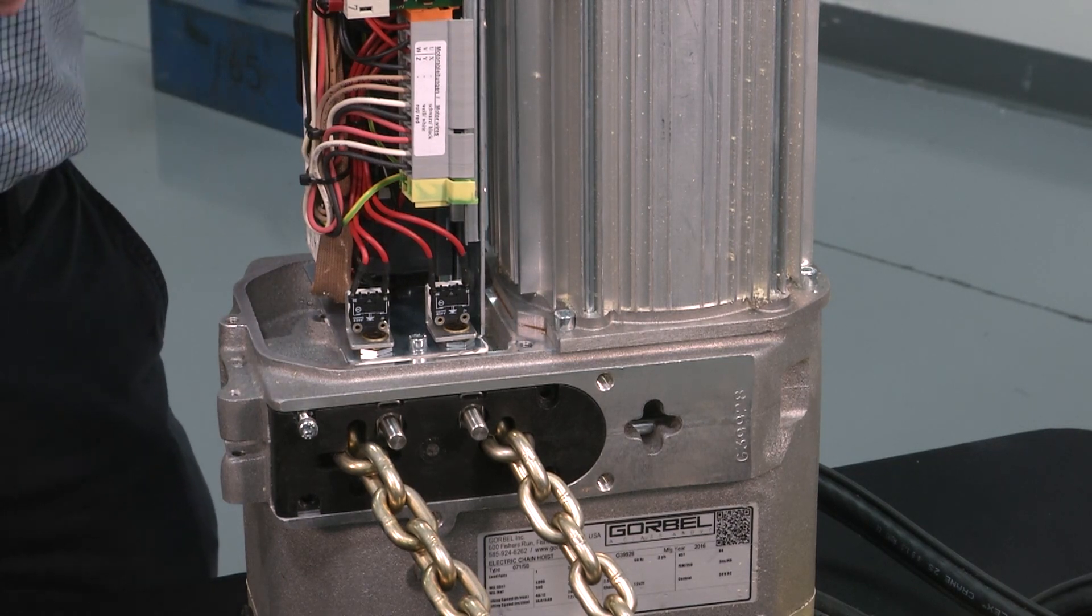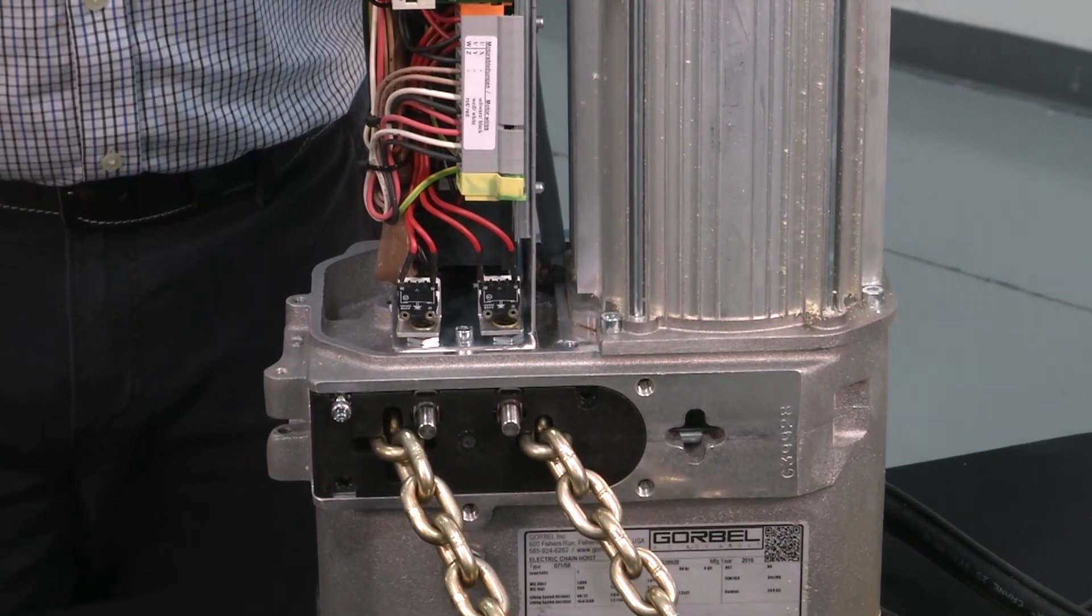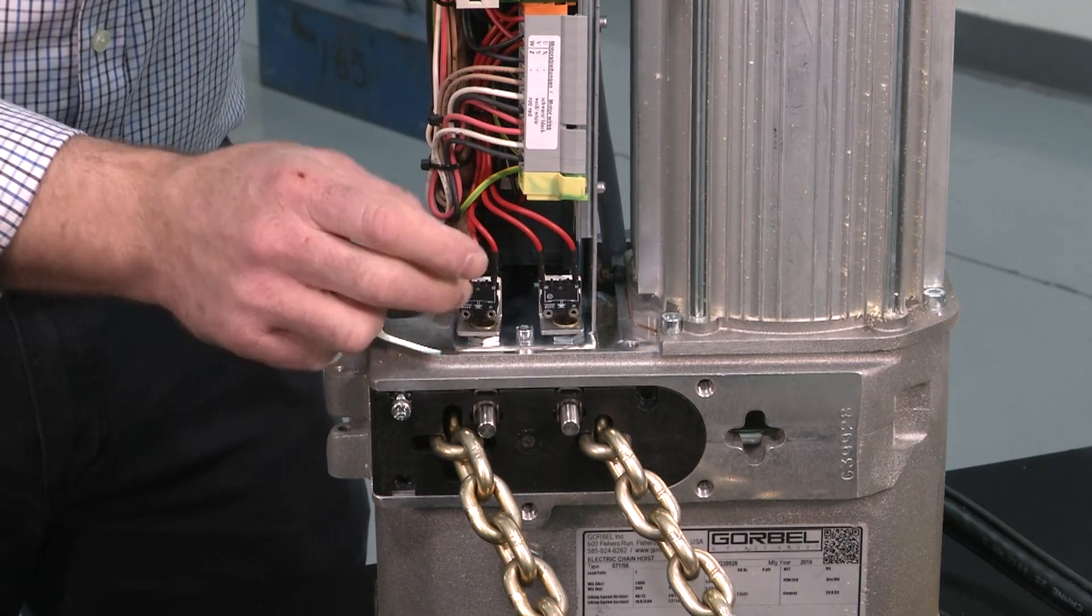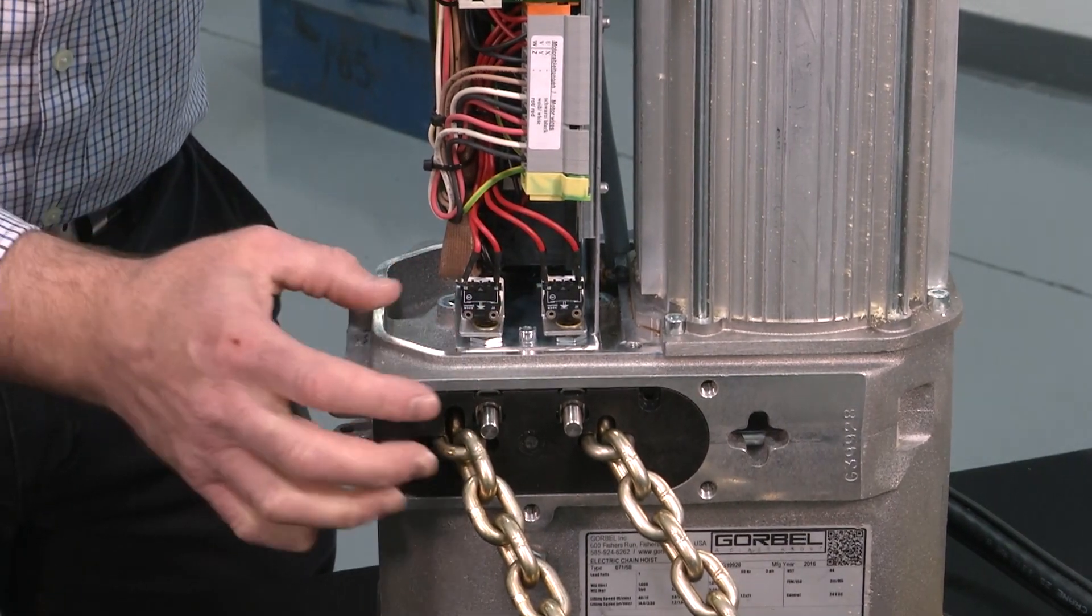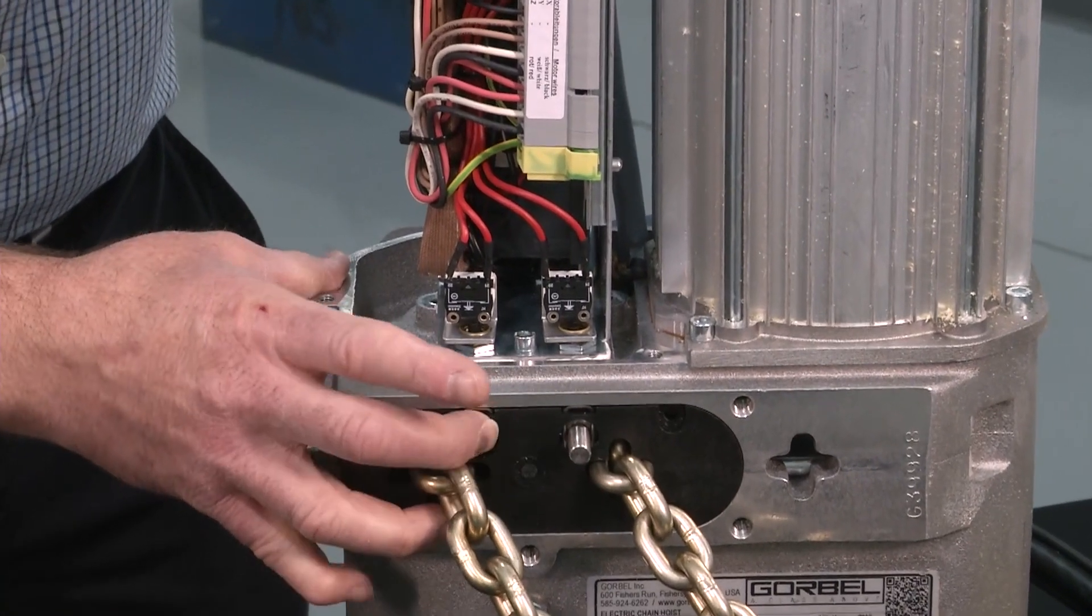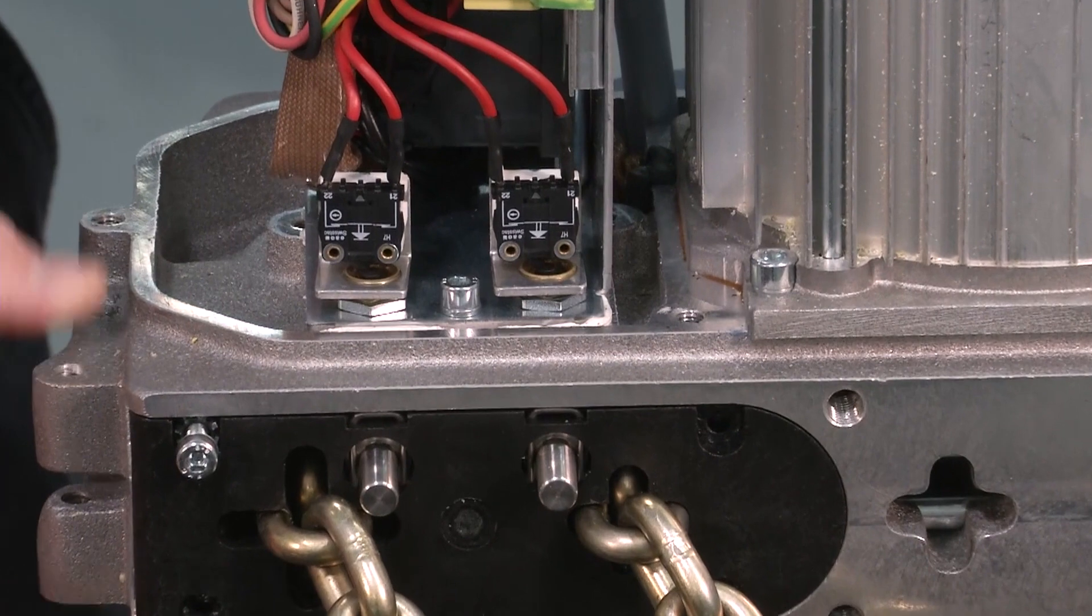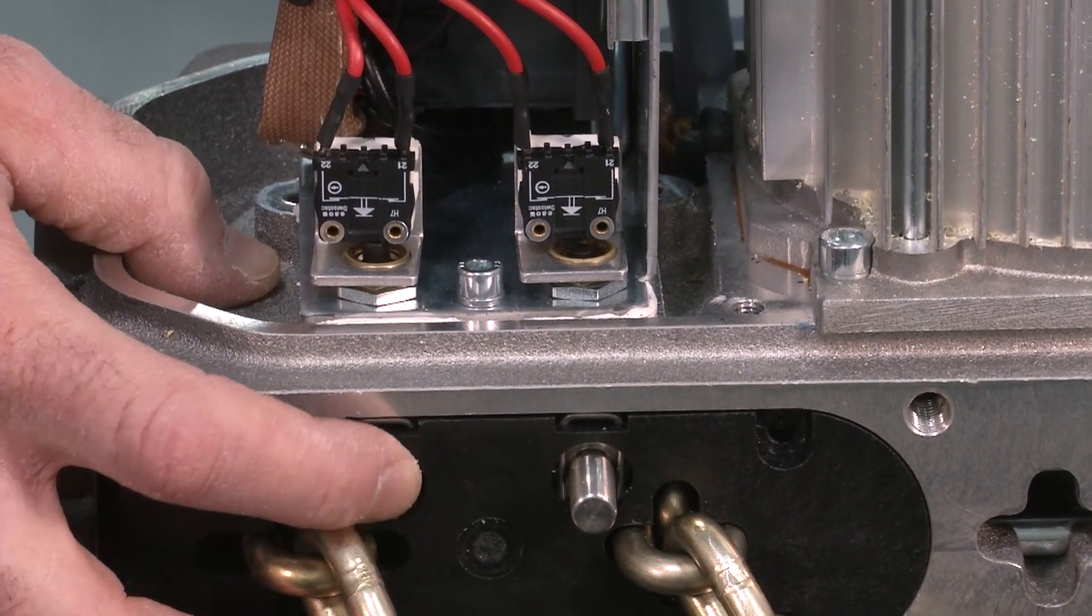So one of the other things we want to talk about—and I mentioned it before when we were talking about our chain guide—is these two limit switches here are physically the limit switches. Now if you move in close you can actually see as I press the limit switches, and this is where the chain bag would normally attach, and then this here is the lower limit switch.